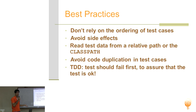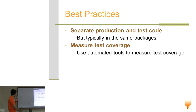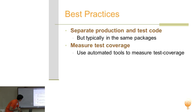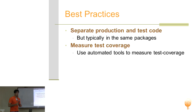In TDD, tests should fail first to assure the test is valid — you learn something from when your test fails, and sometimes you don't get the error message you were expecting, and that's informative. Separate production and test code — you saw that we had a source folder and a separate test folder, and that's typically the way you organize your tests.